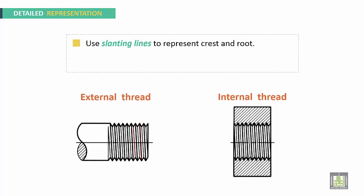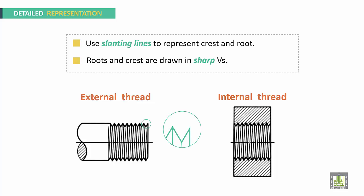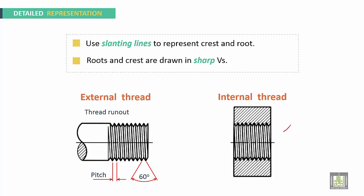For the detailed representation, slanting lines are used to represent crests and roots, and roots and crests are drawn in sharp V's. This is a detailed representation showing external thread and internal thread. Thread run out appears in this region.